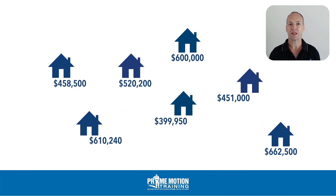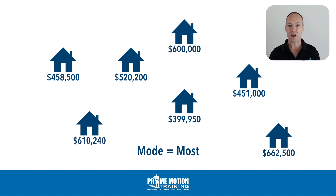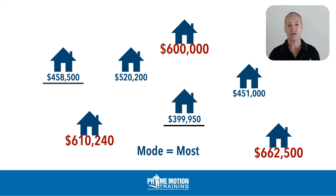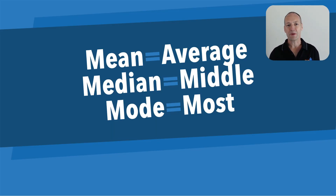Let's finish off with the last one, which is mode. If you're looking at a data set and asked to determine the mode in relation to price bracket — $400,000, $500,000, $600,000, $700,000 — the mode is that price bracket that shows up the most in the data set. In this example, the $600,000 price bracket is the mode, because houses sold in the $600,000 bracket appear more than the $300,000, $400,000, or $500,000 brackets. So mode equals most. Let's quickly review the three terms: mean means average, median means middle, and mode means most.